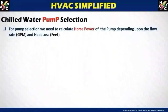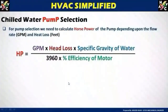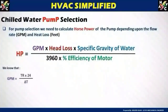For pump selection, we need to calculate the horsepower of the pump depending on two parameters: flow rate in GPM and head loss. To calculate the horsepower, you need GPM — the flow of water — and the head loss in feet, meters, or KPa depending on how you are calculating. The formula for HP (horsepower) is: GPM × head loss × specific gravity of water, divided by 3960 (which is a constant) × percentage efficiency of the motor.